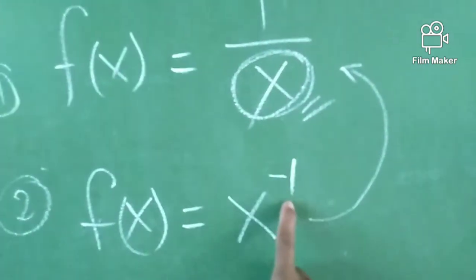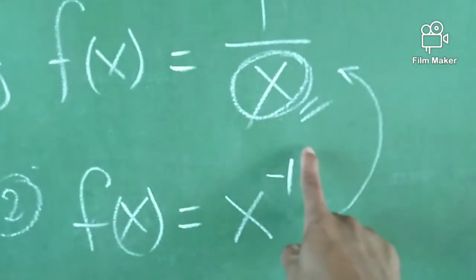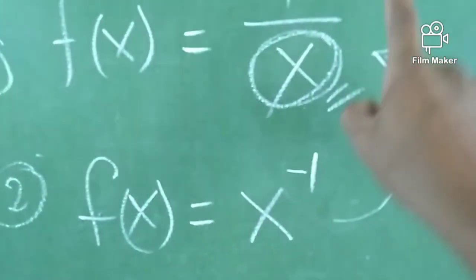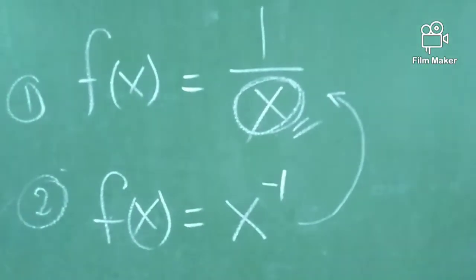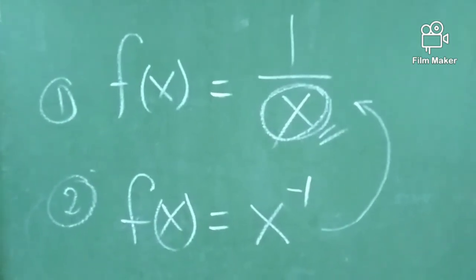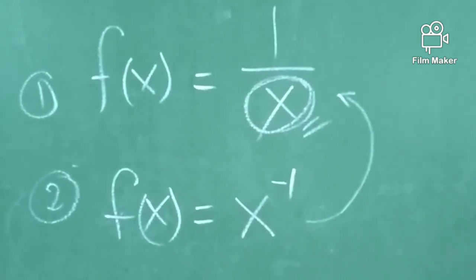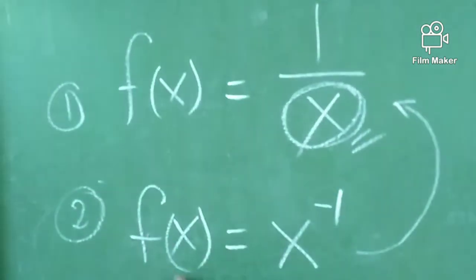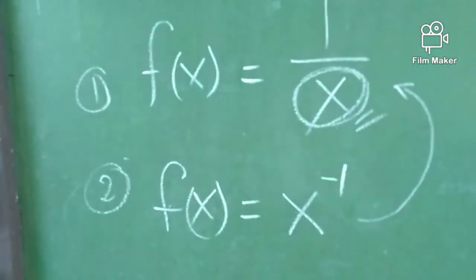To make this negative exponent positive, we place this entire term in the denominator. And that will create a variable in the denominator. So these two, when you see them, they look the same.